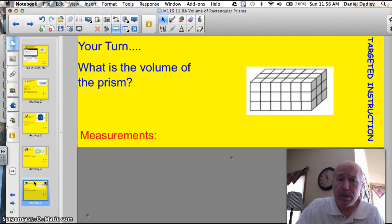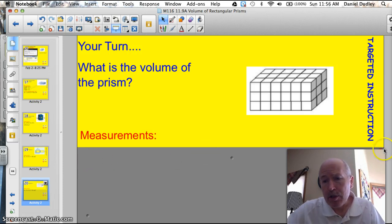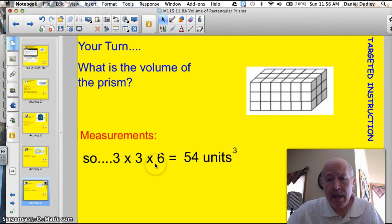Your turn for kind of a tricky one using that same logic. What's the volume of this prism? Well, let's see how you did. You could just take and count those out and find that it's 3 this way, 3 this way, and 6 this way. And pop them in. 3 times 3 times 6. 3 times 3 is 9. Times 6 is 54 units cubed. Very nice.